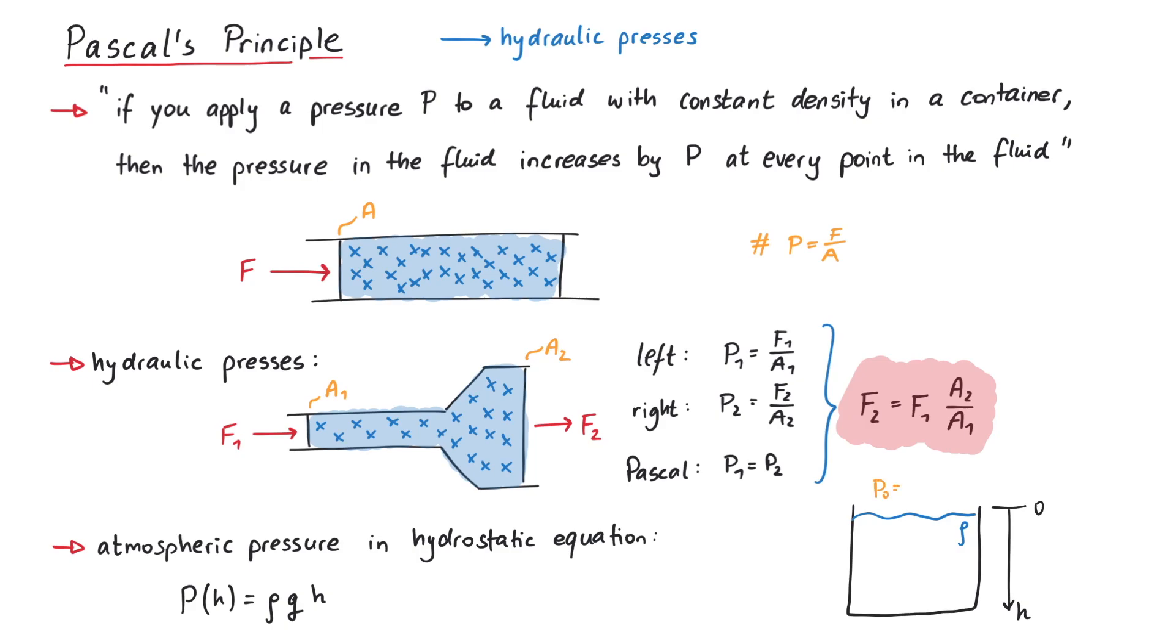And if the fluid container is open to the atmosphere at the top, we add the atmospheric pressure P0 to all points inside the fluid, which is basically a constant shift in pressure.